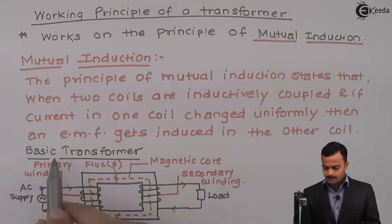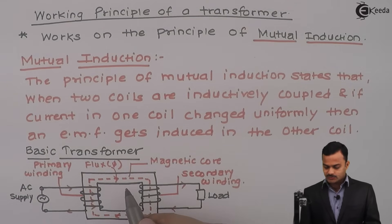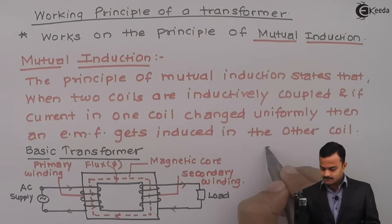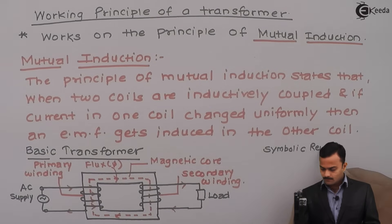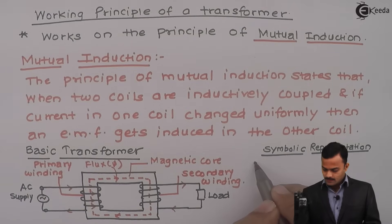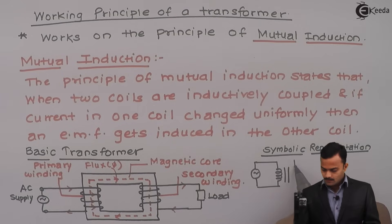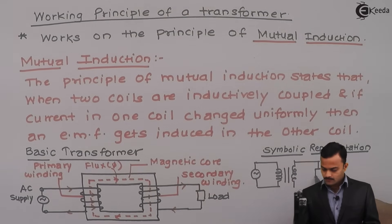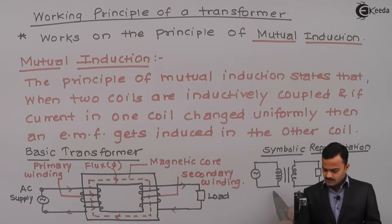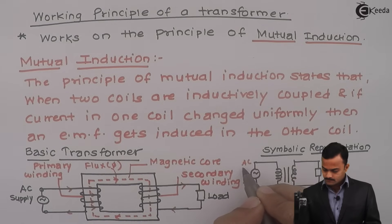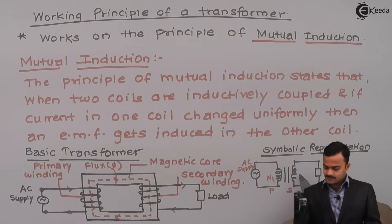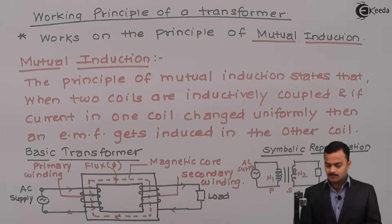I have explained that concept with the help of a basic transformer. Now, how can this basic transformer be represented symbolically? AC supply is connected to the primary winding. There is a magnetic core. The secondary winding is connected to the load. This is the primary winding with N1 turns. This is the secondary winding with N2 turns. And this is the load.